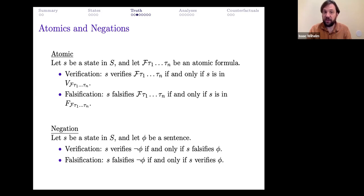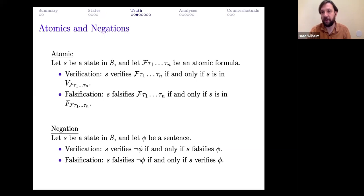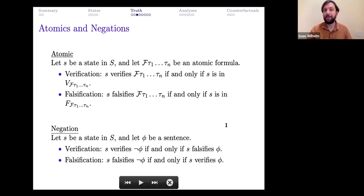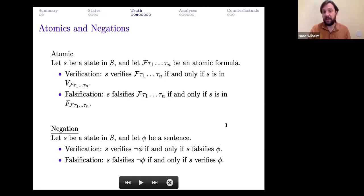For the truth conditions for atomic formulas: a state S verifies an atomic formula if and only if that state is in a certain set of states. In the models, there is a formal widget that maps every atomic formula to a set of states — in fact two such functions. One function V maps each atomic formula to the set of states which make that formula true; the other function F maps each atomic formula to the set of states which make that formula false.